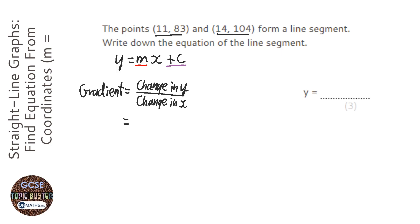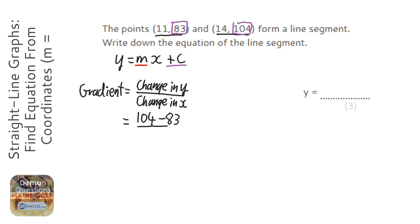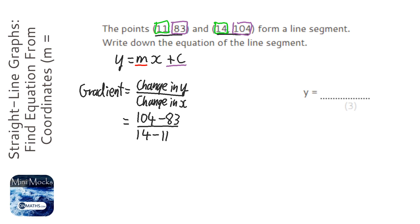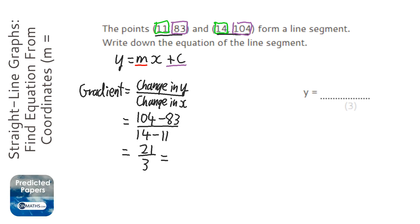The change in y: our two y values are 104 and 83, so it's going to be 104 take away 83. Our two x values are 14 and 11, so it's 14 take away 11. Notice it's the second coordinate take away the first — that's how you get a change. So 104 take away 83 is 21, and 14 take away 11 is 3. Now 21 divided by 3 is 7, so the gradient is 7.